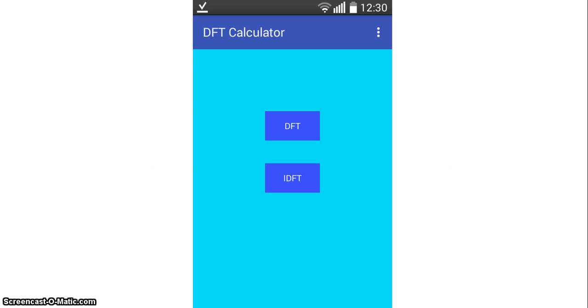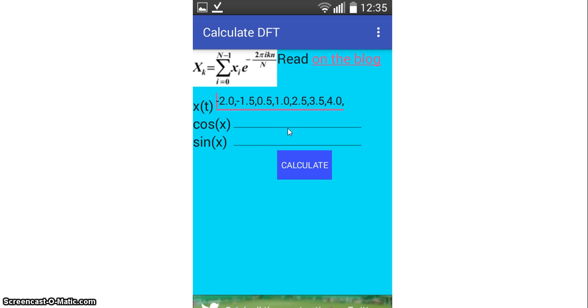To calculate DFT or inverse DFT you can use Android application. For DFT, just press DFT button. Then enter your signal as an array with comma-separated values in text view next to x of t label, then press calculate button and see result for cosine and sine coefficients respectively.